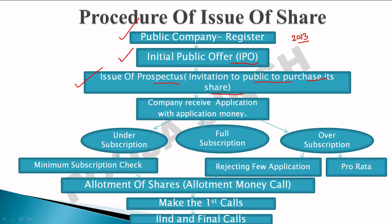After the prospectus is issued, if the public is interested in buying shares, the company receives applications with application money. Some money is submitted along with the application — that is called application money.